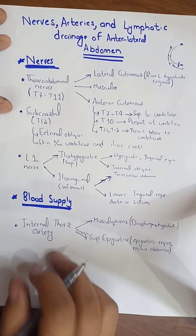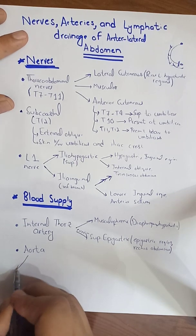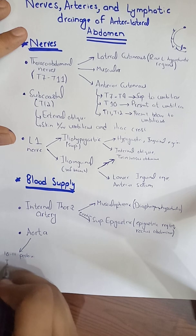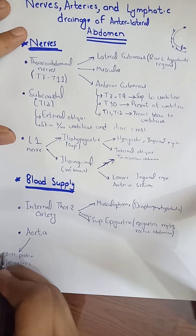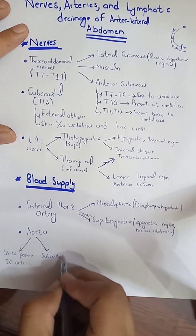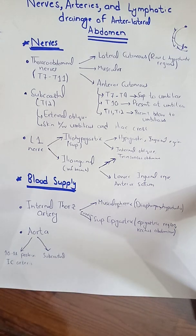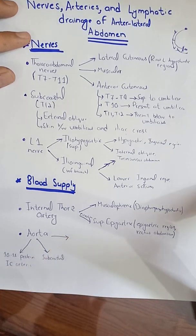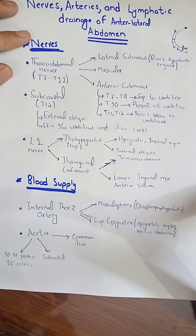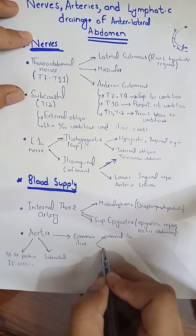The second main artery is the aorta, which gives two direct branches: the 10th and 11th posterior intercostal arteries, and the subcostal artery. The aorta has four parts — ascending aorta, arch of aorta, thoracic aorta, and abdominal aorta — and the abdominal aorta divides into the right and left common iliac arteries, which then divide into the internal iliac and external iliac arteries.